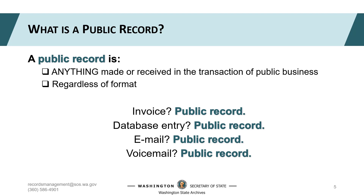Please note: the definition I've offered for a public record is for retention and destruction purposes, which is what the Washington State Archives is here to help you with. Public records are also defined under the scope of public disclosure under Chapter 42.56 of the RCW. The State Attorney General's Office can help you with disclosure and the Public Records Act.